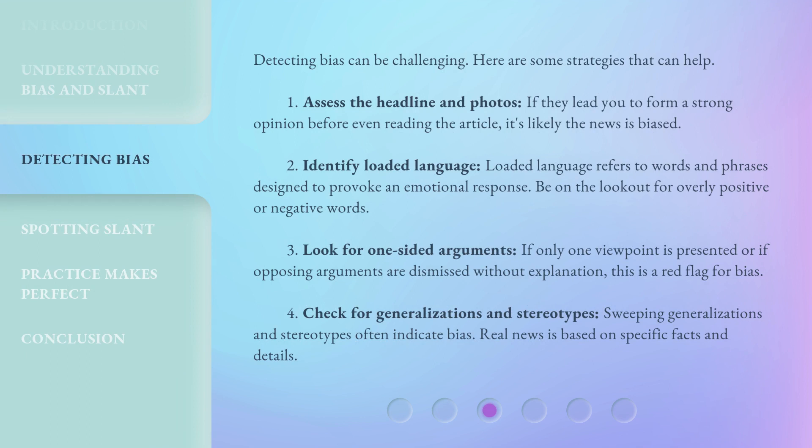Detecting bias can be challenging. Here are some strategies that can help. 1. Assess the headline and photos — if they lead you to form a strong opinion before even reading the article, it's likely the news is biased. 2. Identify loaded language. Loaded language refers to words and phrases designed to provoke an emotional response; be on the lookout for overly positive or negative words. 3. Look for one-sided arguments. If only one viewpoint is presented, or if opposing arguments are dismissed without explanation, this is a red flag for bias.